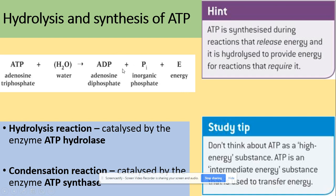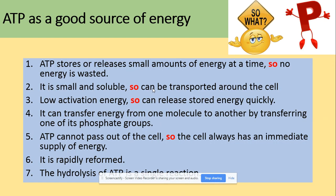ATP as a good source of energy is a really typical exam question. Here are seven model answers. First, ATP stores or releases small amounts of energy at a time — so no energy is wasted. It is small and soluble, so it can be transported around the cell. It has low activation energy, so it can release stored energy quickly.